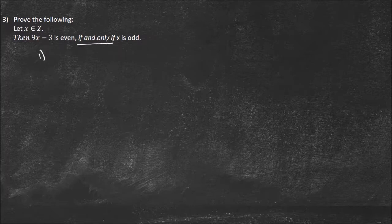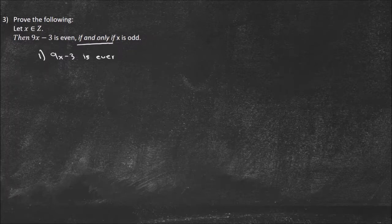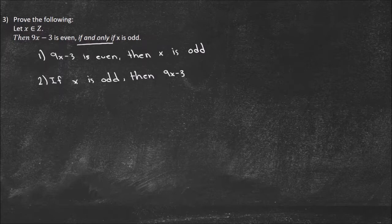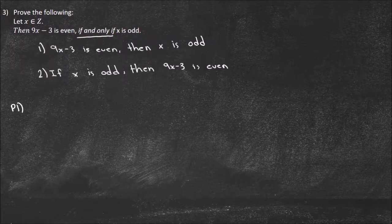Again, let's write down our two parts — remember, the 'if and only if' is the indication that we have two parts. So part one: if 9X minus 3 is even, then X is odd. And secondly, if X is odd, then 9X minus 3 is even. So you just have to do it both ways. For part one, I see this as a good candidate for contraposition — because it's easier to start with the odd and even conditions.